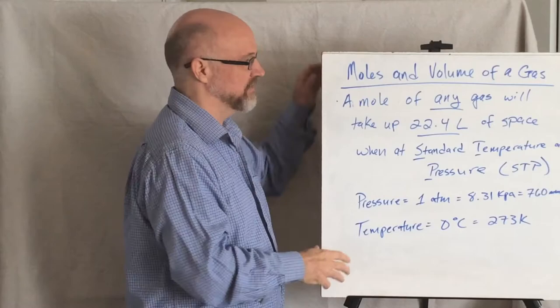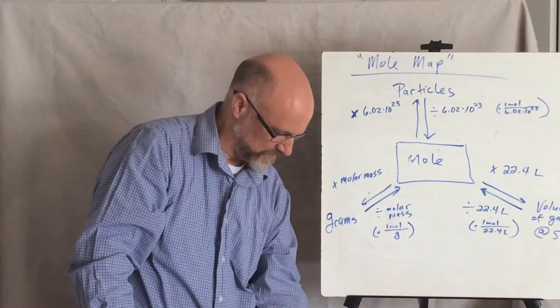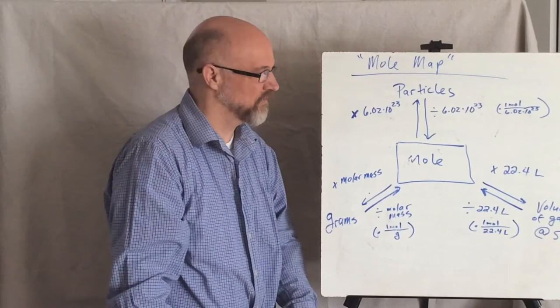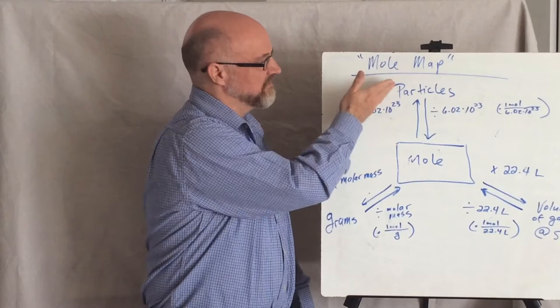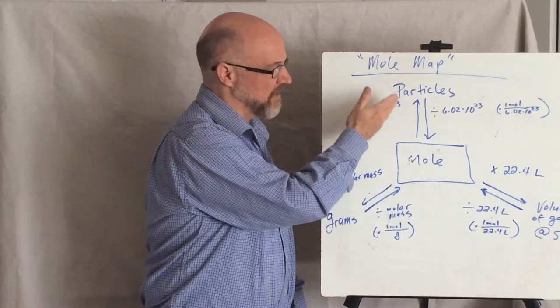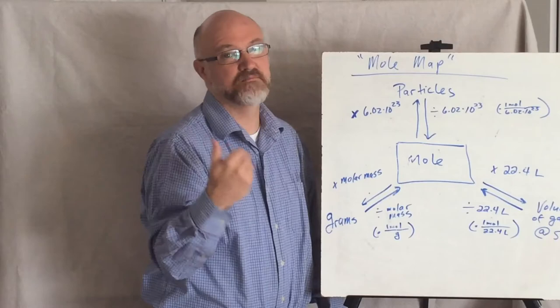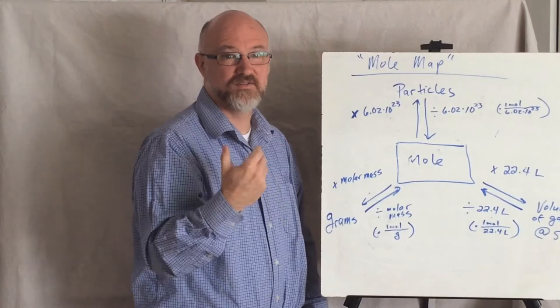So we have these connections, which you've seen in lots of different textbooks, you see it on the web, so it's nothing new, I can't take credit for it, what I call a mole map. The primary relationship here is a mole is defined as 6.02 times 10 to the 23rd particles. A mole of any substance is going to weigh its mass in grams from the chart, what we call its molar mass. And so if it's a pure element, it's just what the value is on the chart.